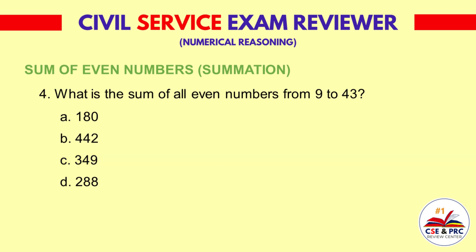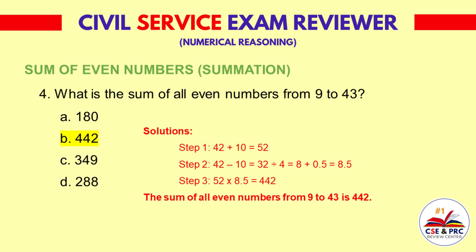Question 4: What is the sum of all even numbers from 9 to 43? a. 180  b. 442  c. 349  d. 288. The answer is b. 442.